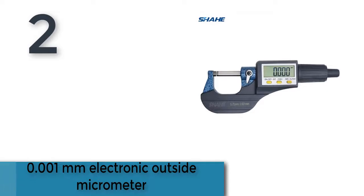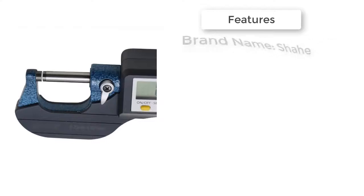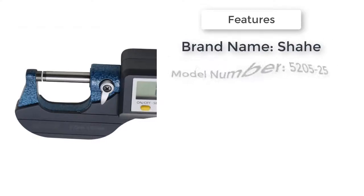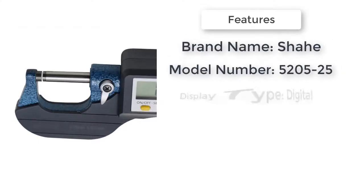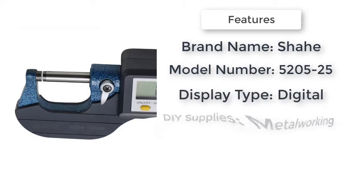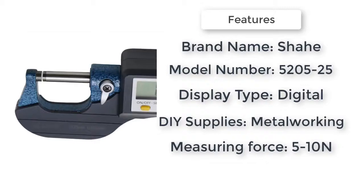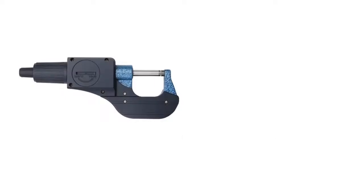The item number 2 is 0.001 millimeters electronic outside micrometer. Brand name Brand, DIY supplies metalworking, micrometer type outside micrometers, display type digital, model number 520525, accuracy 0.001 millimeters.